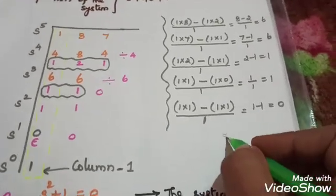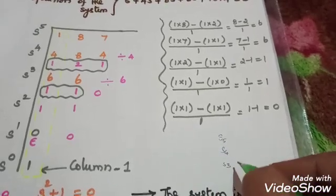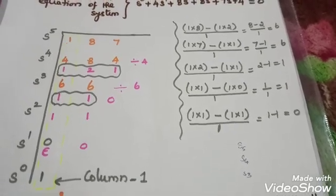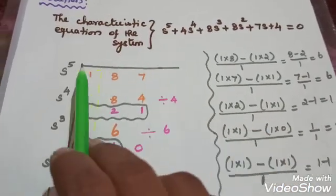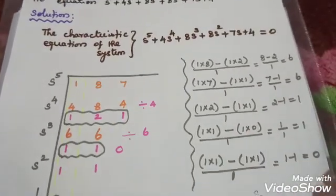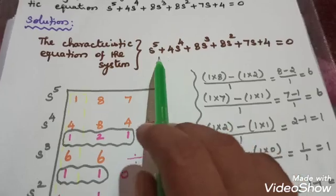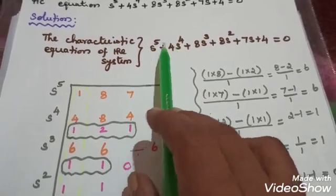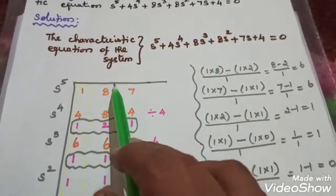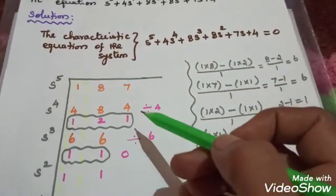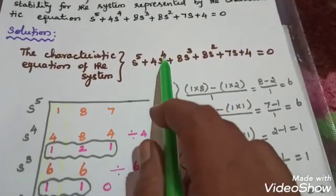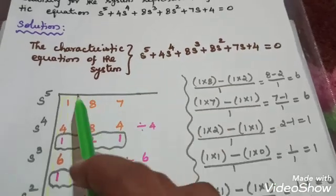Now we are going to develop the Routh array. S⁵, S⁴, S³ — writing the rows. The S⁵ row has the coefficient 1. The S⁴ row has the coefficient 4 and 1, arranged vertically in the table.